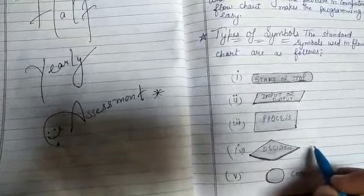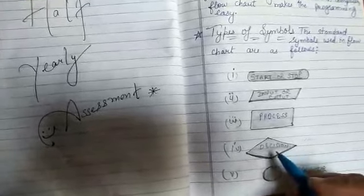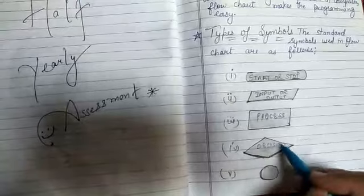Then next is this diamond box, which is known as decision box. Decision box means if any condition is there, like if A is greater than B, then what is the solution. So this box is used for decision.